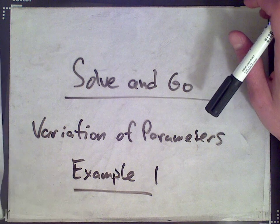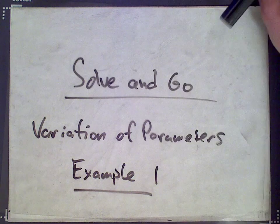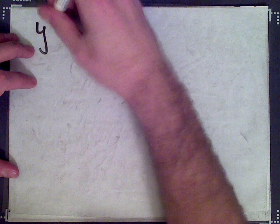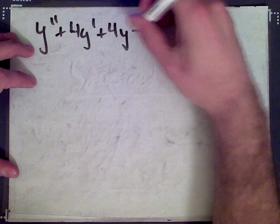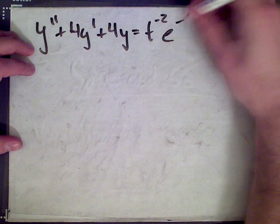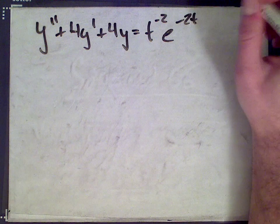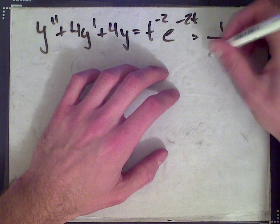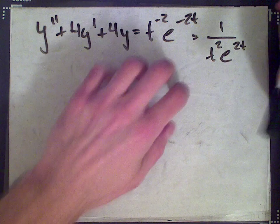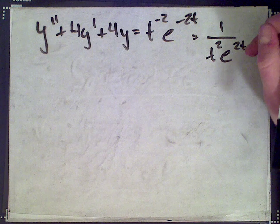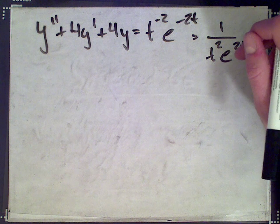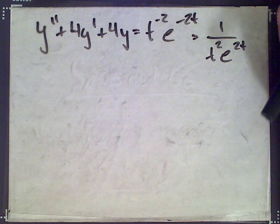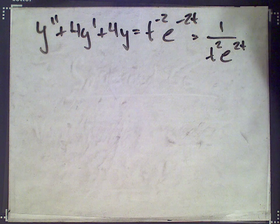We're going to solve the following differential equation: y double prime plus 4y prime plus 4y equals t to the negative 2 times e to the negative 2t. On the right-hand side we have 1 over t squared times e to the negative 2t, so it's a quotient, which means the previous method you would have learned — undetermined coefficients — doesn't work so well.